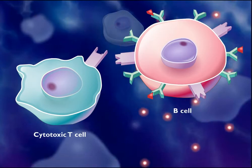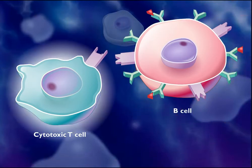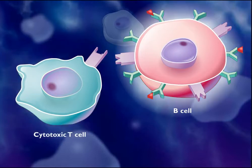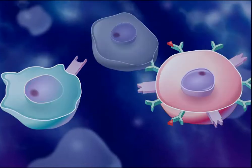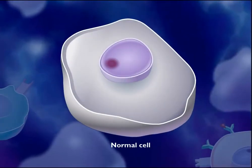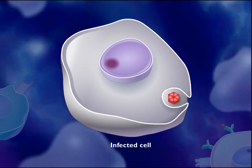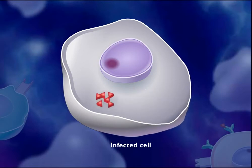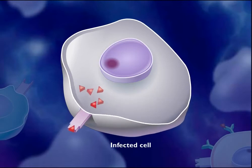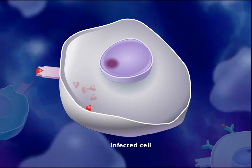The immune response from this point follows two paths, one using cytotoxic T-cells and one using B-cells. Normal cells of the body that become infected can also digest some of the pathogens and display antigen fragments on their cell surfaces.